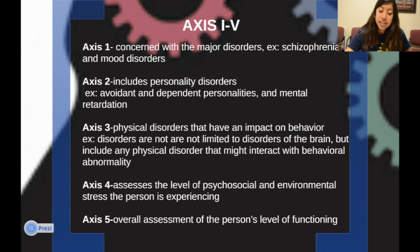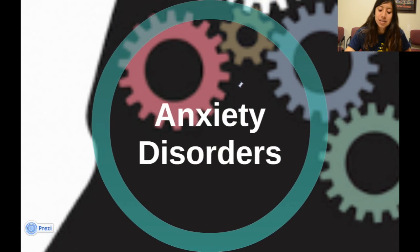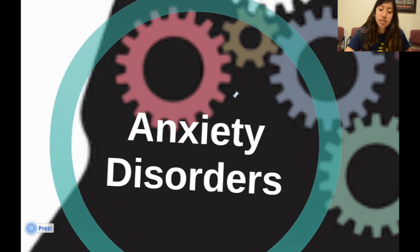Axis three covers physical disorders that have an impact on behavior. Disorders are not limited to the brain but also include physical disorders that might interact with behavioral abnormality. Axis four assesses the level of psychosocial and environmental stress the person is experiencing. Axis five is the overall assessment of the person's level of functioning.